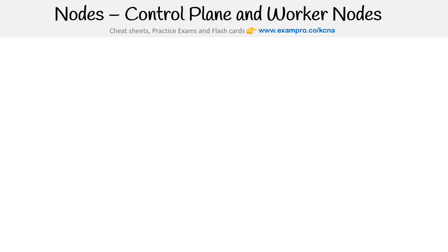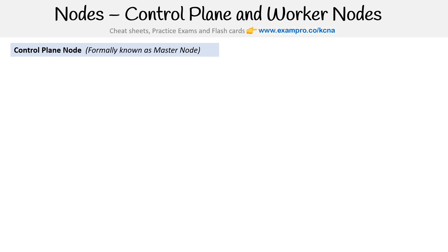This is Andrew Brown from ExamPro, and we are taking a look at control plane nodes versus worker nodes. Control plane nodes were formerly known as master nodes. I'm mentioning this because a lot of documentation out there — tutorials and such — are completely out of date and not using the new inclusive term. Even the kubernetes.io website still has some outdated stuff, mostly in the graphics. A few years out, I think we'll all be moved over to the new terminology.